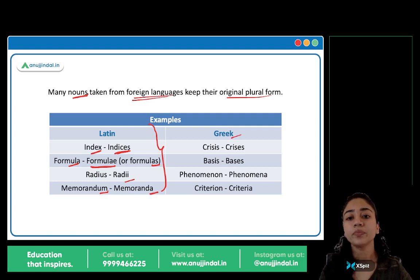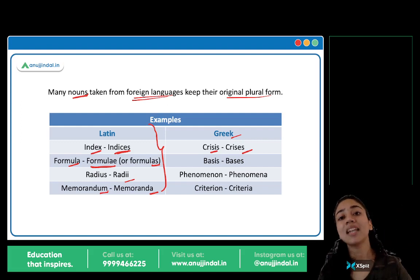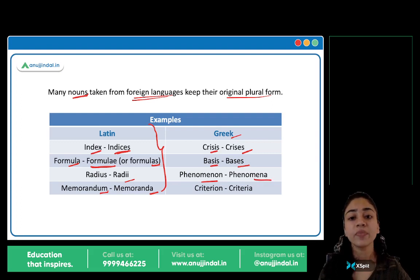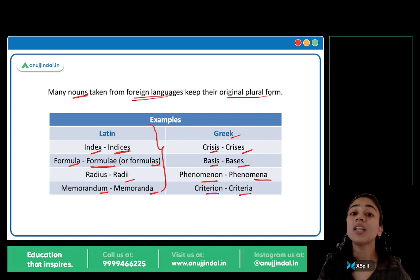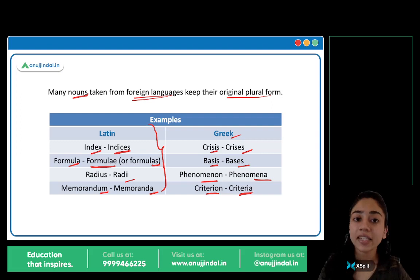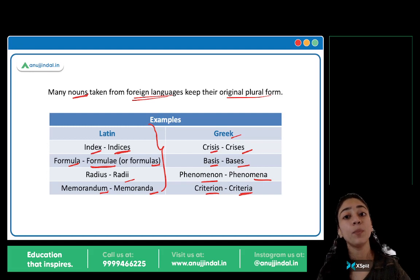Now here we have some words from Greek. Crisis — singular hai crisis, plural hai crises, the I becomes ES. Basis → bases. Phenomenon — one phenomenon, many phenomena. Criterion → criteria. What are the criteria? Because criteria plural hai, ek se zyadha. Criterion matlab one — what is the criterion? What are the criteria? Criterion singular hai, criteria plural hai.